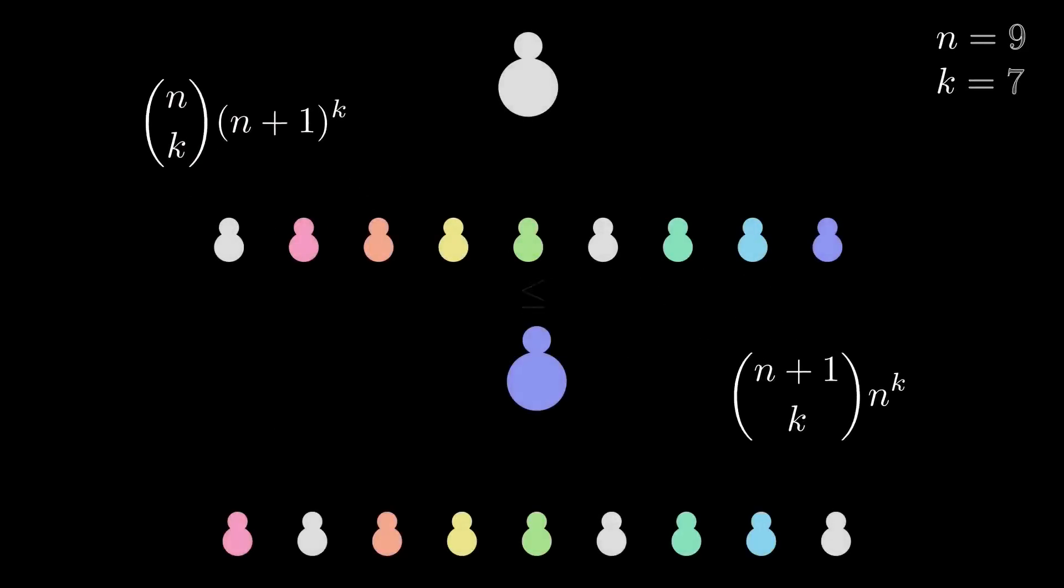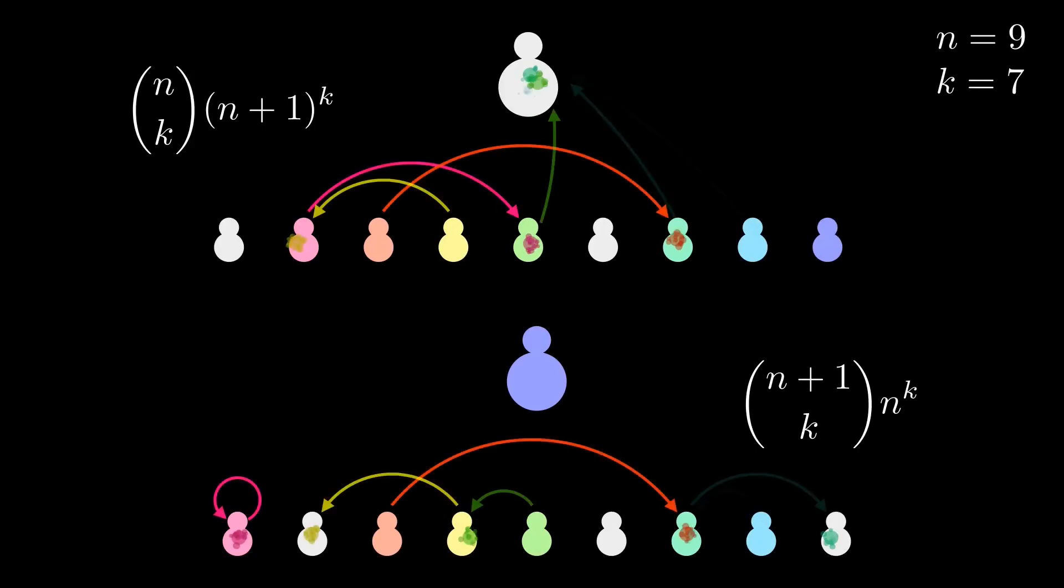We're going to prove it in the same way as before by constructing a set for each side and showing that the left set can be injected into the right. Like before, we're going to have some paint balloon fights, but this time we only have k balloons, so not everyone is going to get one. Let's again have n kids and one adult handy. For our animation, we'll put the left-hand smaller set on top. For the top set, this expression counts the number of ways we can choose k of the n children to receive balloons, and then have those kids throw their balloons at any target, including the adult.